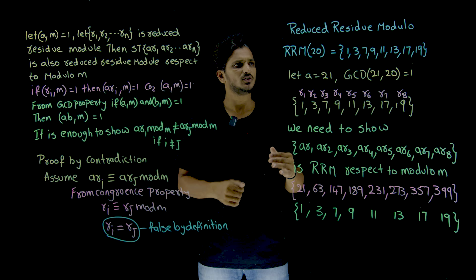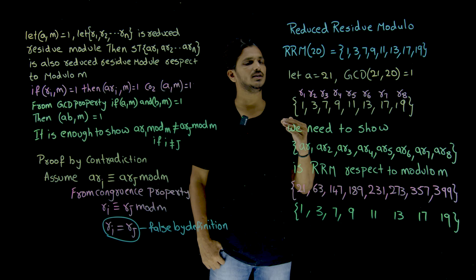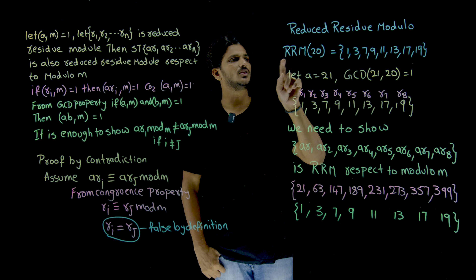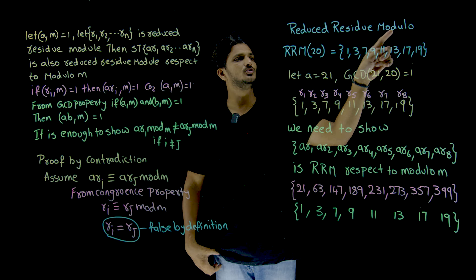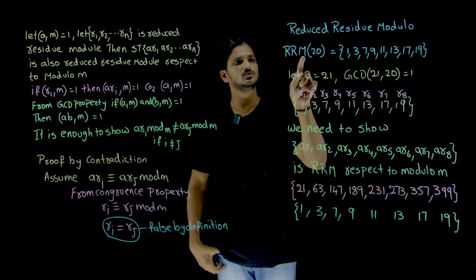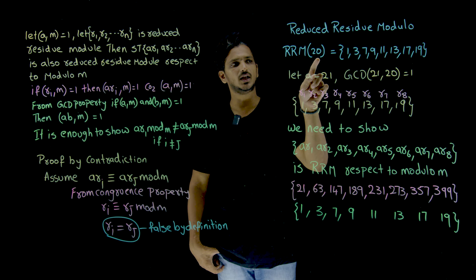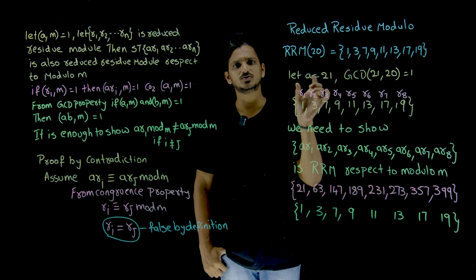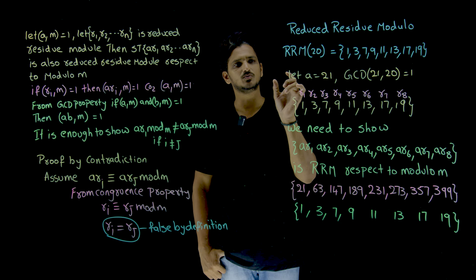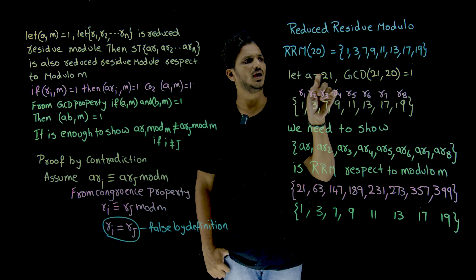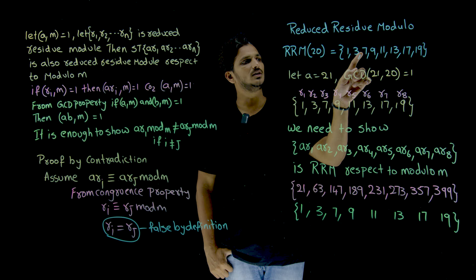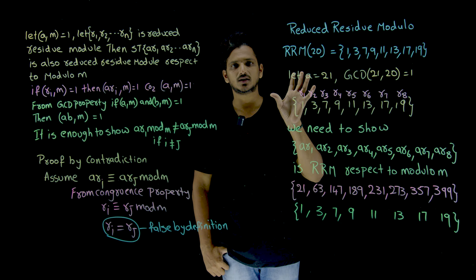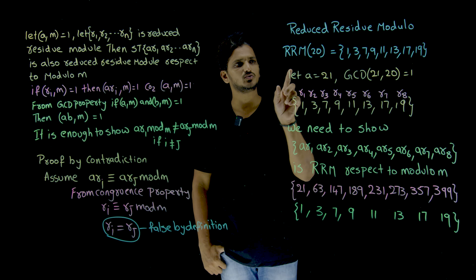So let's take the reduced residue modulo of 20. The set belonging to the reduced residue modulo of 20 is: 1, 3, 7, 9, 11, 13, 17, 19. This is the set that belongs to modulo 20.